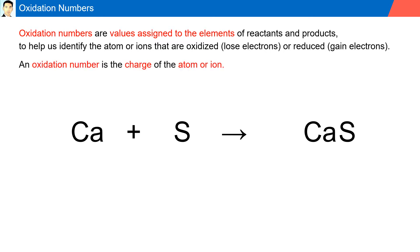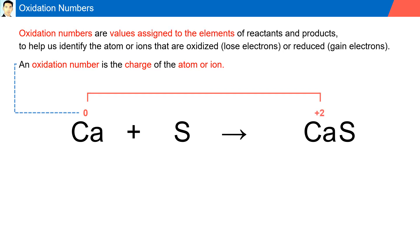The oxidation number is the charge of the atom or ion. For example, calcium has an oxidation number of zero. It loses two electrons to become plus two; its oxidation number in a compound CaS is plus two. Sulfur in its free state has an oxidation number of zero; it lost two electrons to have an oxidation number of minus two.